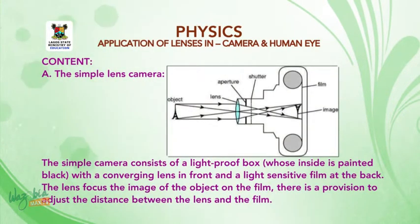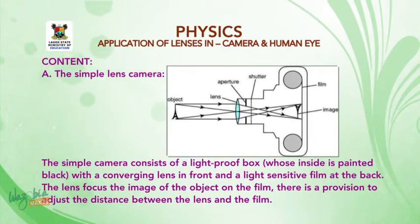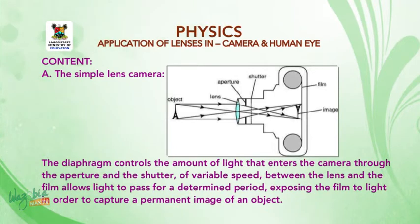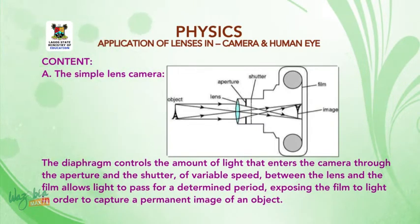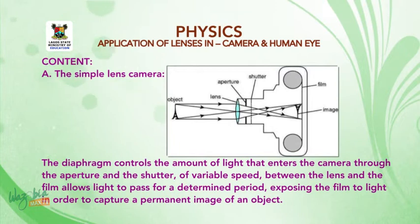Let's start with a simple lens camera. The simple lens camera consists of a light-proof box whose inside is painted black, with a converging lens in front and a light-sensitive film at the back. The lens focuses the image of the object on the film. There is a provision to adjust the distance between the lens and the film. The diaphragm controls the amount of light that enters the camera through the aperture, and the shutter of variable speed between the lens and the film allows light to pass for a determined period, exposing the film to light in order to capture a permanent image of an object.